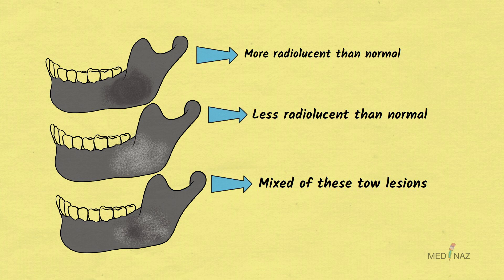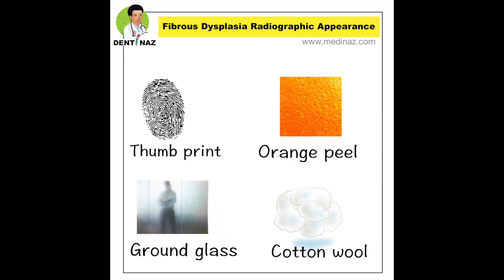Looking at the trabecular pattern, the trabeculae are shortened, thinner, irregularly shaped, and more numerous than normal trabeculae. The altered trabeculae may give rise to various appearances like orange peel, ground glass, thumbprint, and cotton wool. Simple bone cyst-like bone cavities are seen and occur more commonly in mandibular lesions.